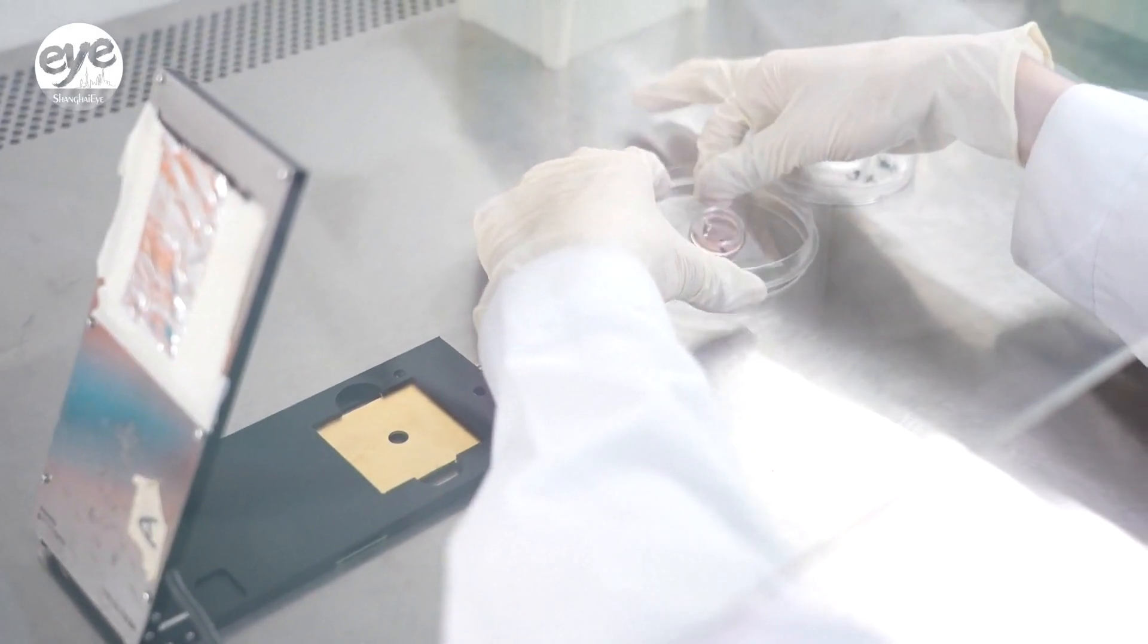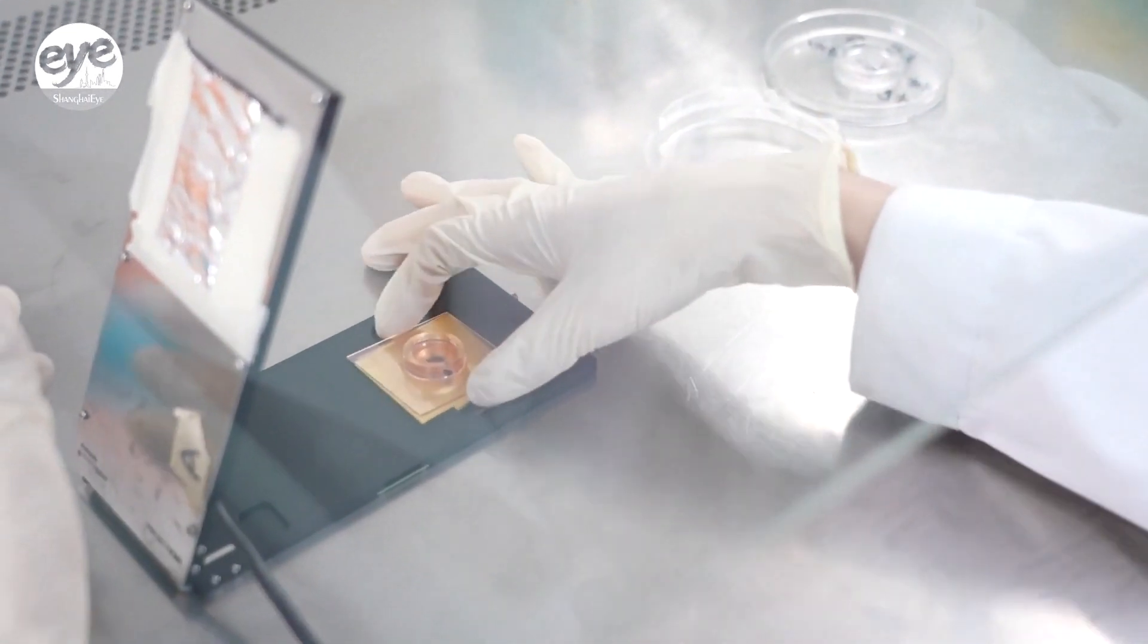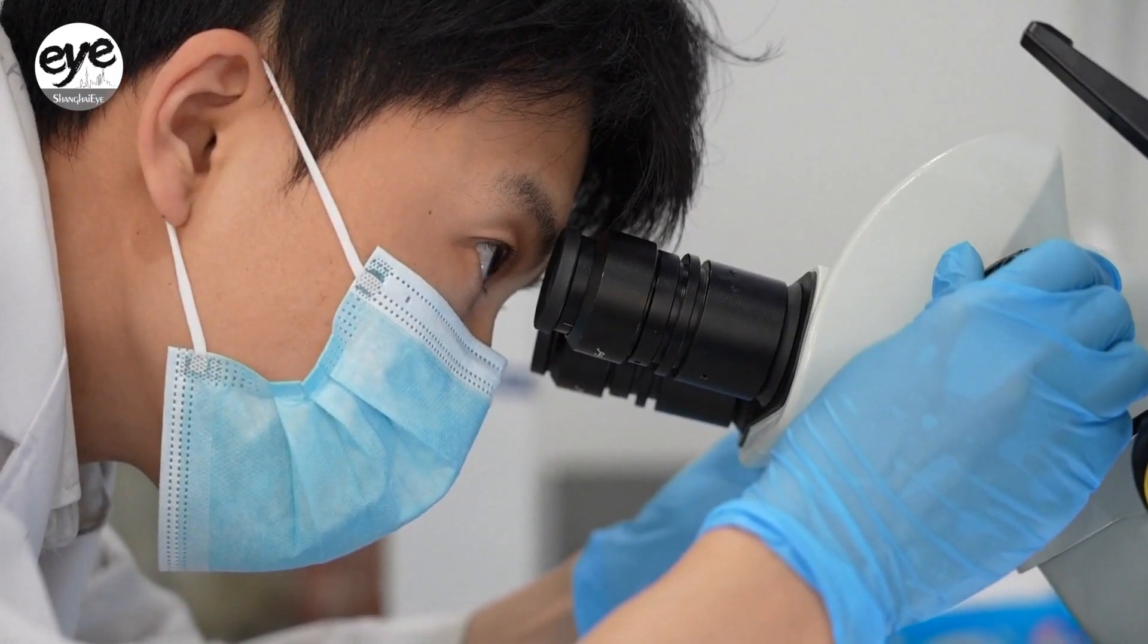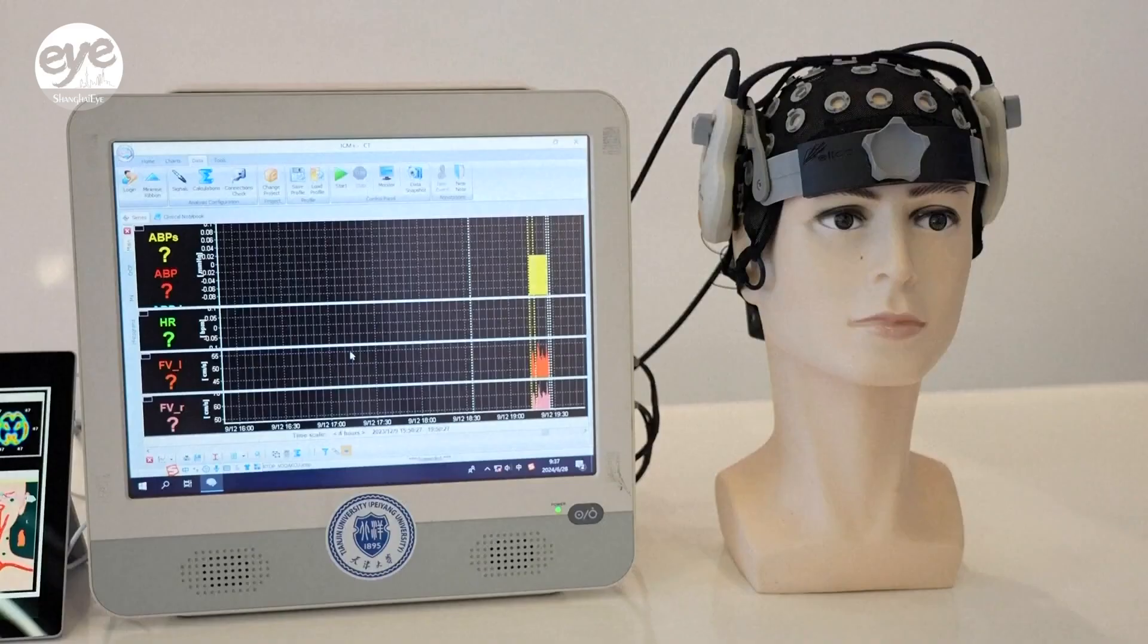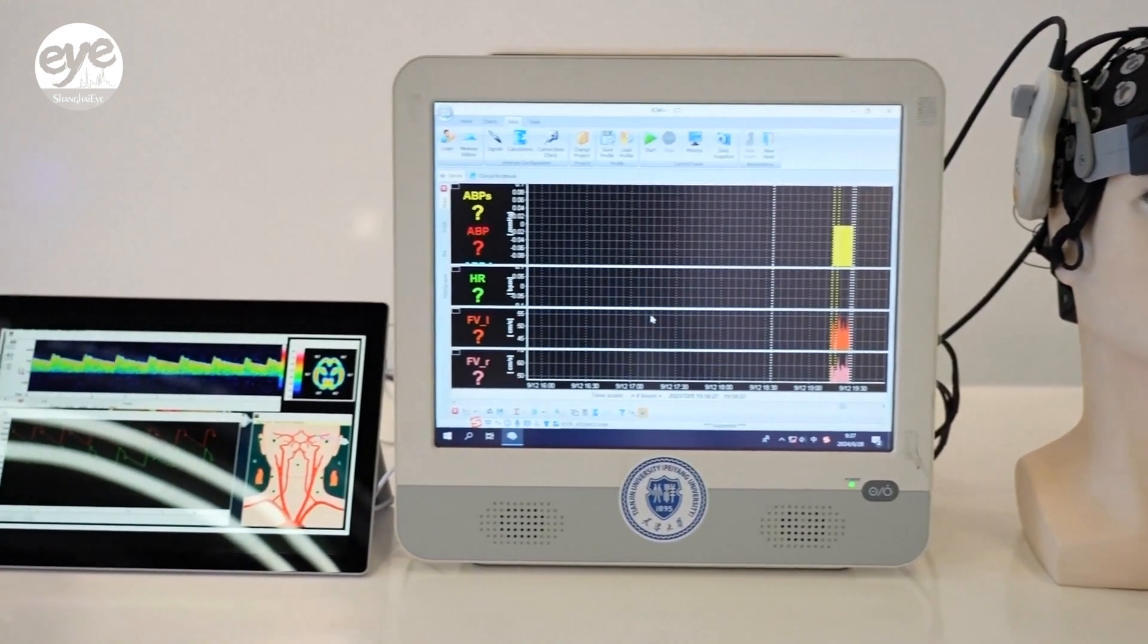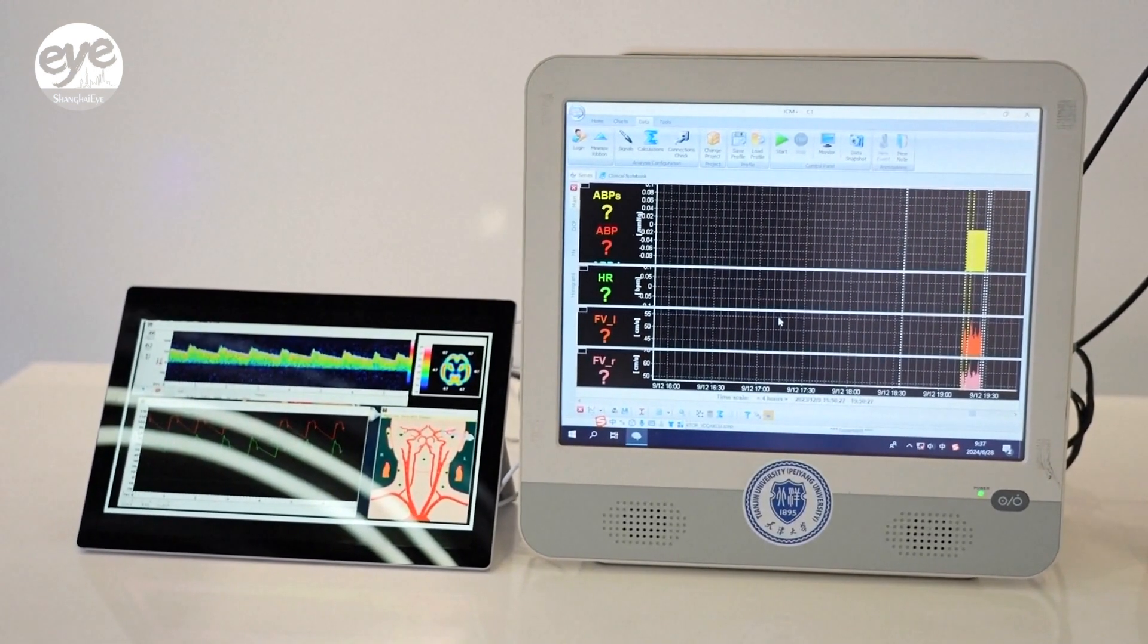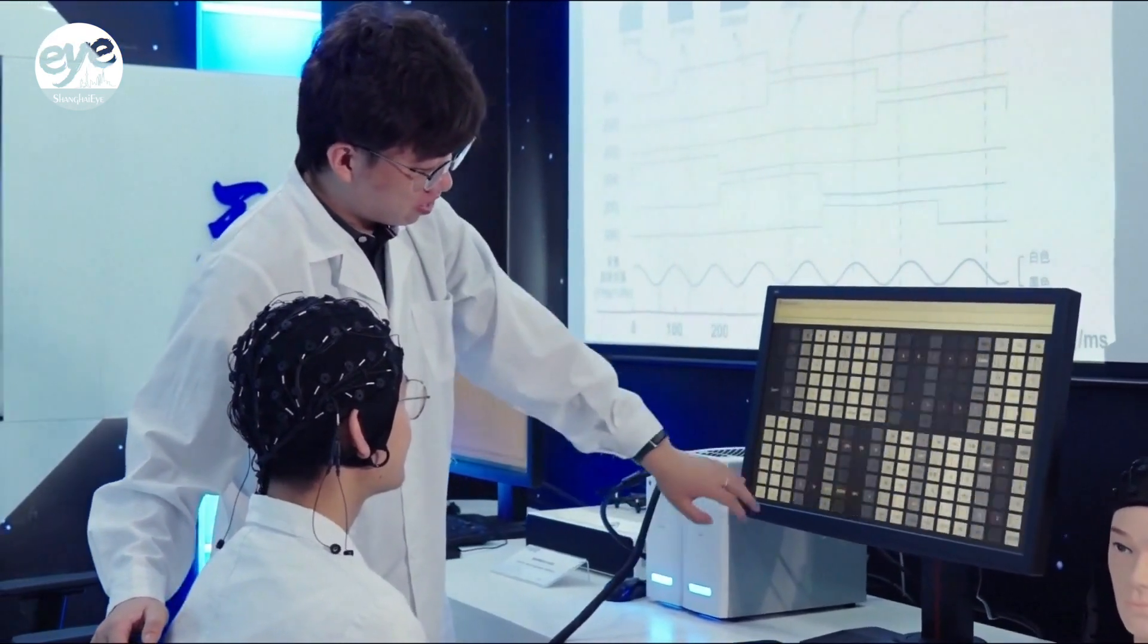Chinese researchers have developed a BCI brain computer interface system on a brain that was grown in a lab. A brain computer interface is a communication link between the brain's electrical activity and an external device like a computer. With the help of a microchip that's implanted into a person's brain, they can control a computer with just their thoughts.